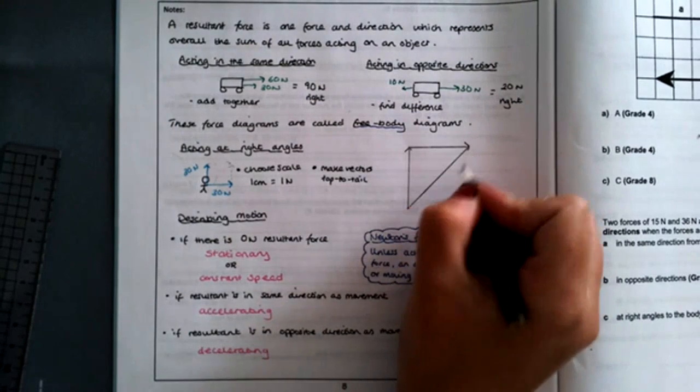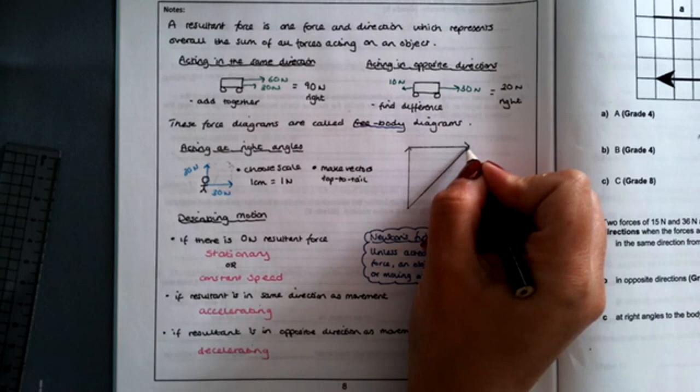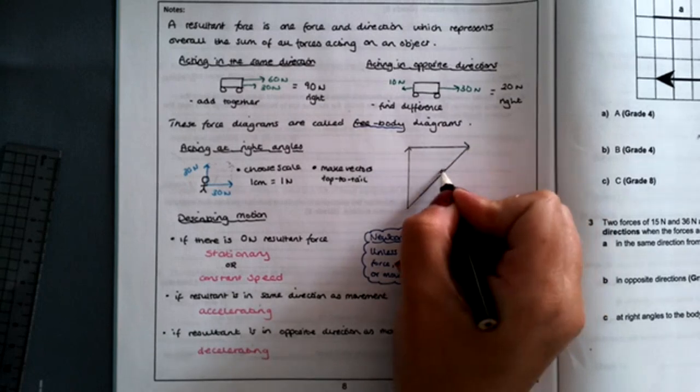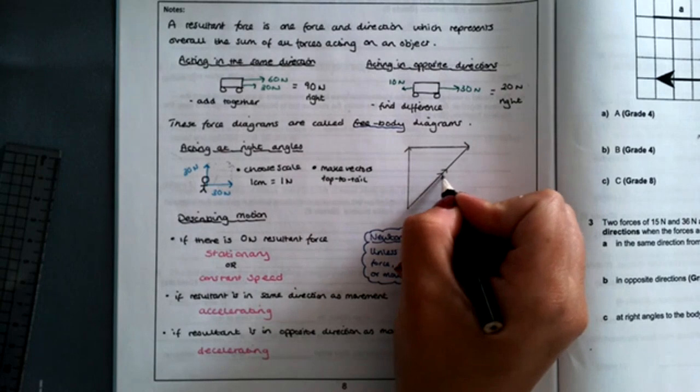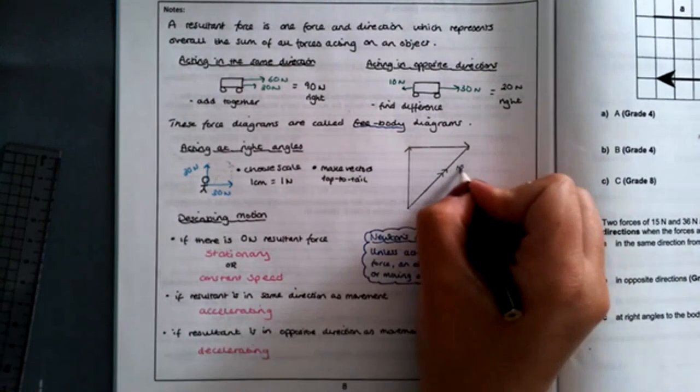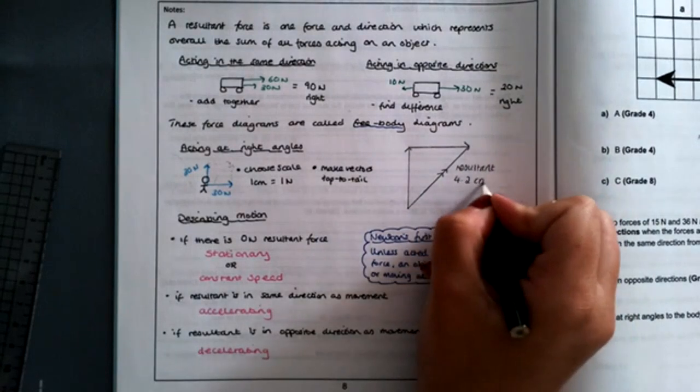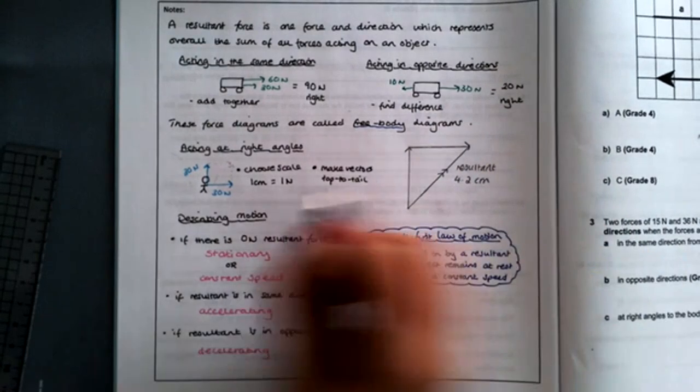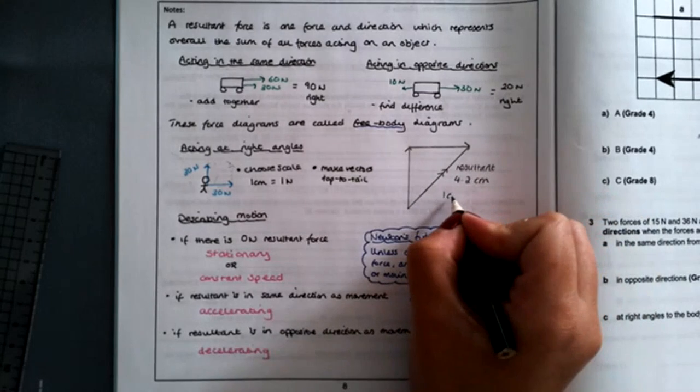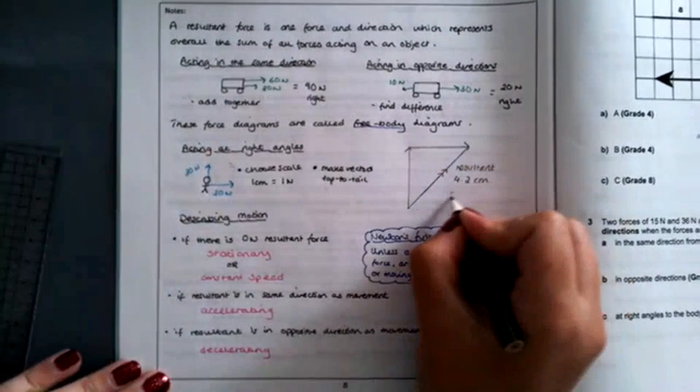Sometimes it's difficult to see where the arrow reaches because you have two tops at the same time, so you tend to draw a resultant with two arrows in the middle of it. That is 4.2 centimeters, and because each centimeter is one newton, this is 4.2 newtons.